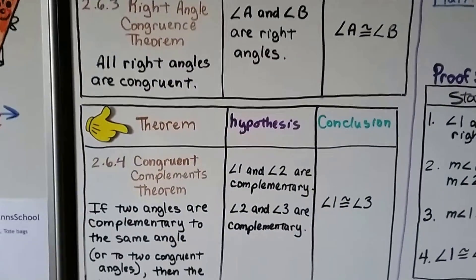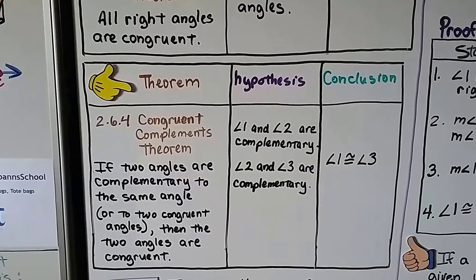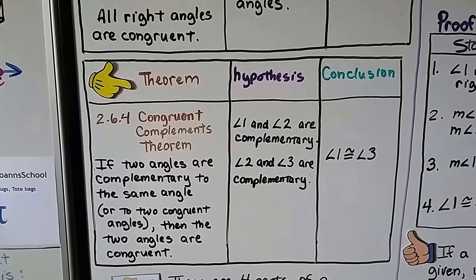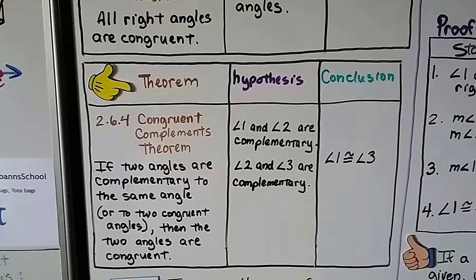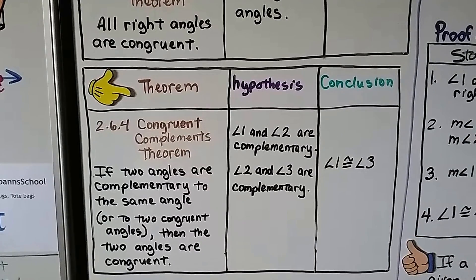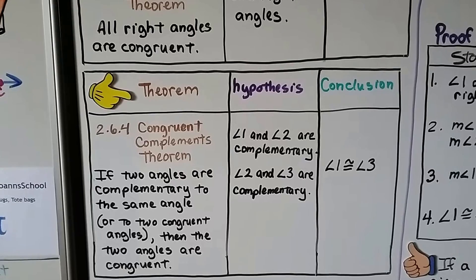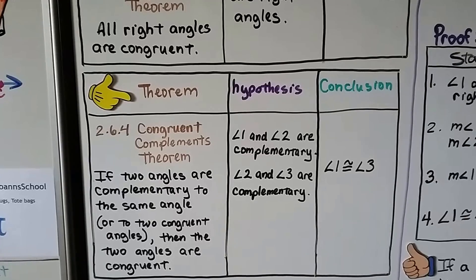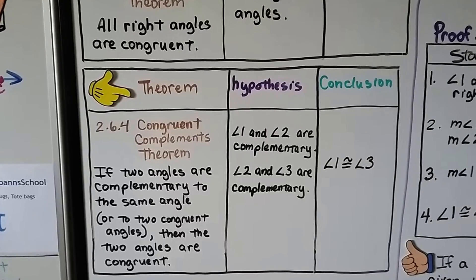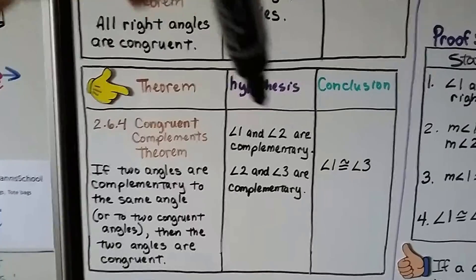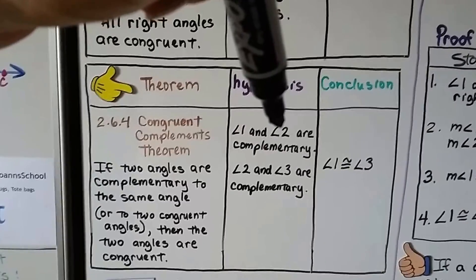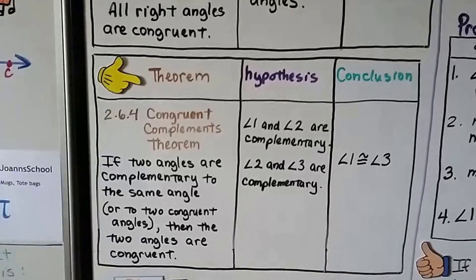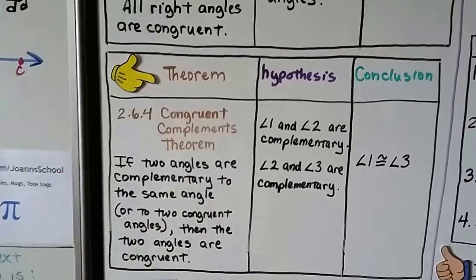Here's another theorem — 2.6.4, the Congruent Complements Theorem. If two angles are complementary to the same angle (meaning they equal 90 degrees), or to two congruent angles, then the two angles are congruent. Our hypothesis: angle 1 and angle 2 are complementary, and angle 2 and angle 3 are complementary. Our conclusion is that angle 1 is congruent to angle 3. For example, if angle 1 is 40° and angle 2 is 50°, and angle 2 and angle 3 are complementary, then angle 3 must be 40°, so angle 1 and angle 3 are congruent.